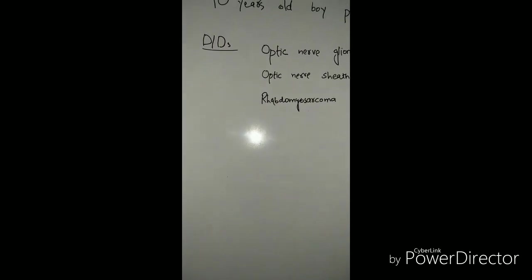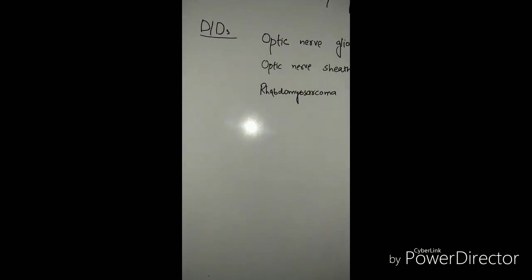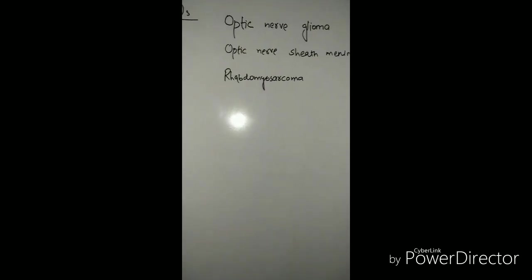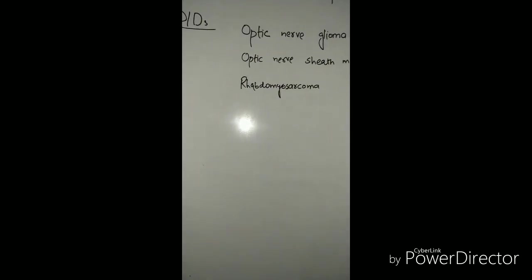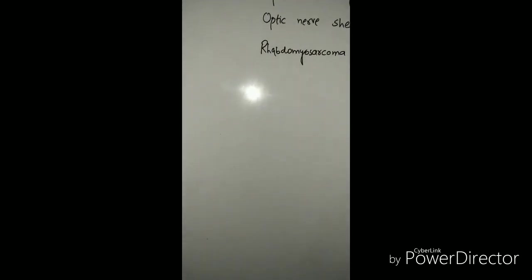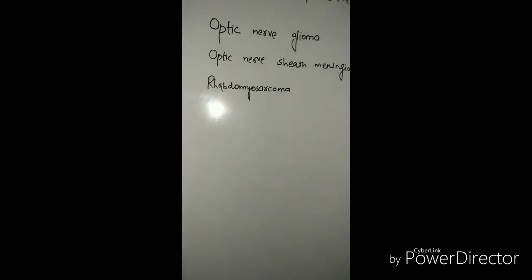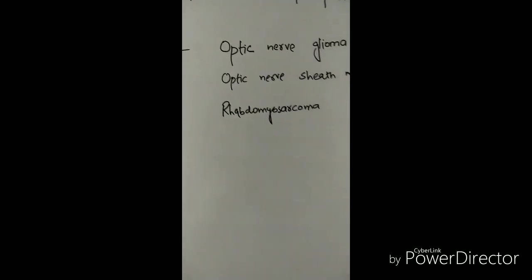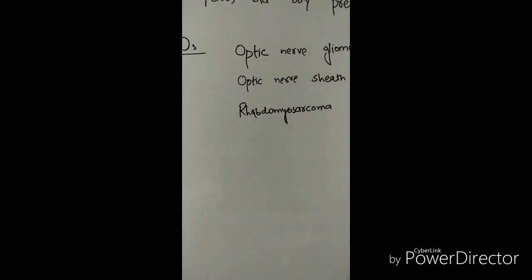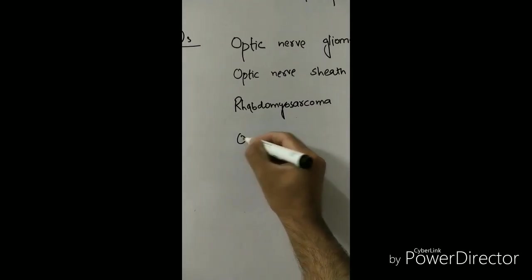So what are the features of the optic nerve glioma? You can say that it's a slow growing tumor of the glial tissue and it has a strong association with neurofibromatosis 1. So if you know the features of the neurofibromatosis 1 you can also relate it.